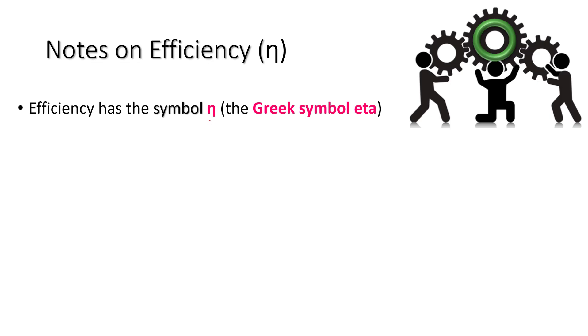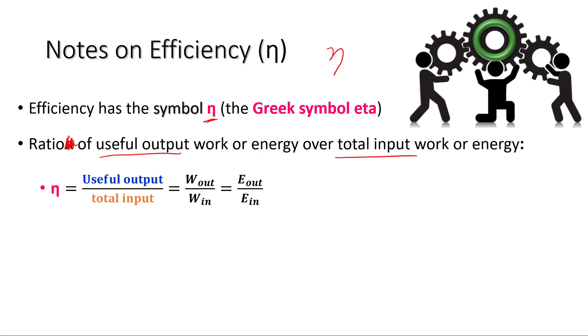So we use the symbol eta, which is this little funny looking thing for efficiency. It kind of looks like an N, but with a tail on the right side. Sometimes epsilon is also used, but we're going to use eta. And efficiency is the ratio of the useful output work, or energy, by the total input work, or energy. So it's useful output over total input. And our useful output is just whatever we're trying to get done, whatever work we're doing. The total input is all of the energy that we're using to do it.